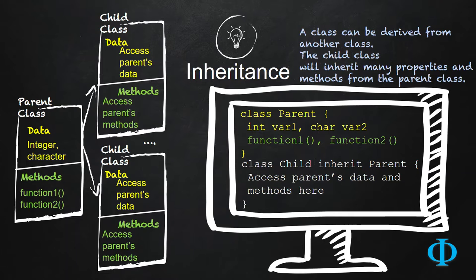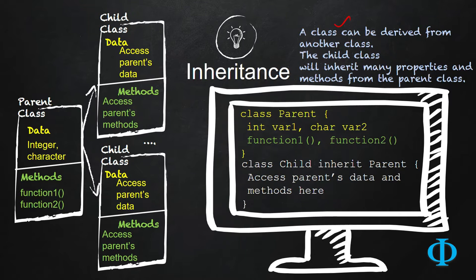The next property of object-oriented programming that we are going to learn is called inheritance. As the name suggests, inheritance means inheriting some property, asset, or function from one object to another object. In object-oriented programming, in order to represent the real world, it is sometimes necessary for a class to be derived from another class. The original class is called the parent class and the derived class is called the child class. The relationship between them is called the parent-child relationship.